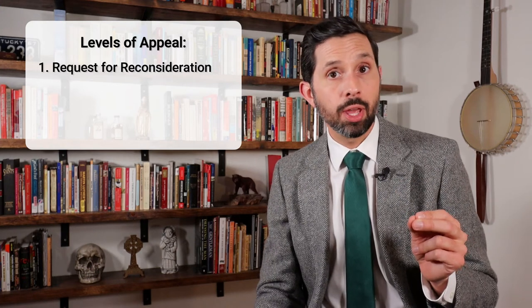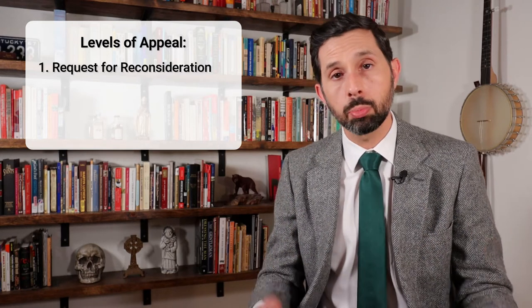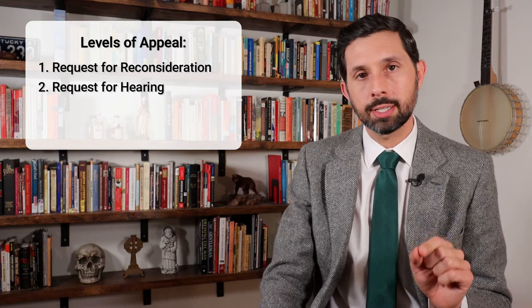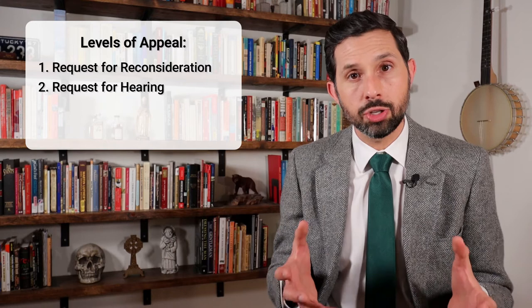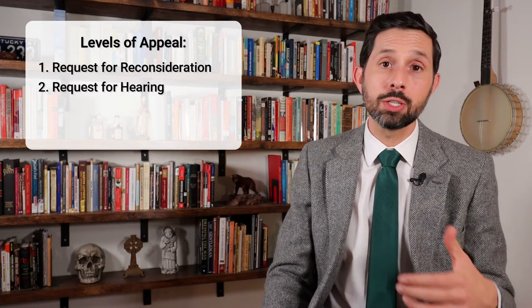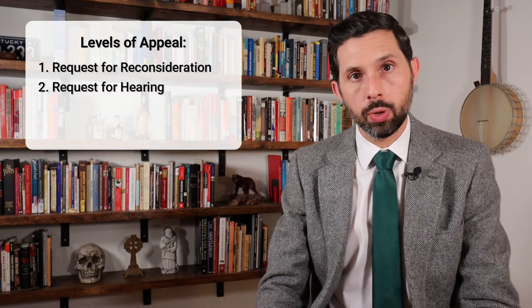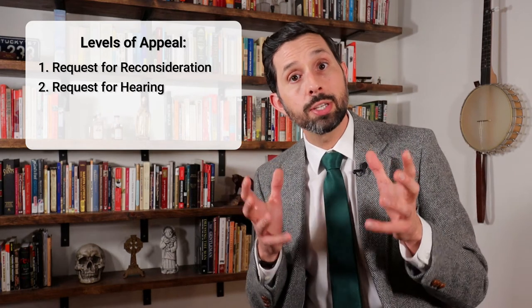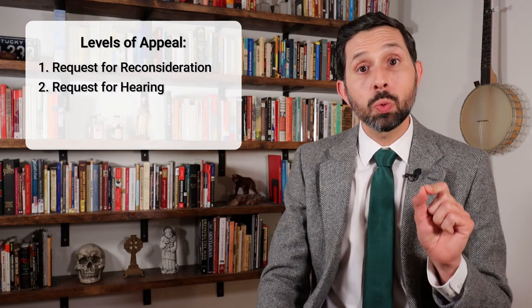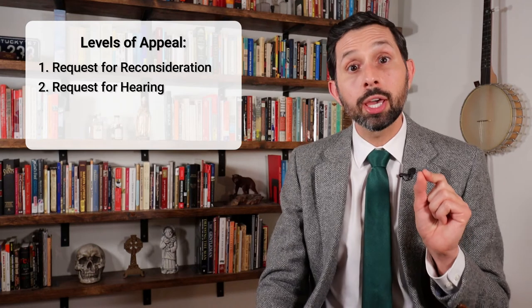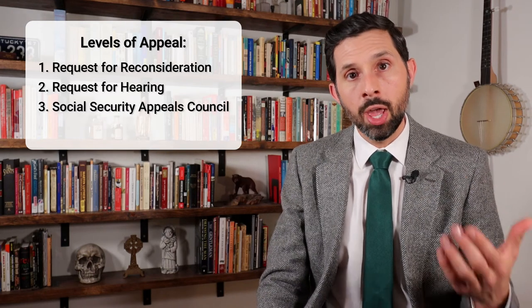If the SSA denies your claim, they'll send you a letter that explains why and tells you how to appeal. There are four different levels of appeal. First, you can appeal by filing a request for reconsideration within 60 days. The SSA will then take a fresh look at your case and any additional documents you provide. If your claim is still denied after the request for reconsideration, you can file a request for hearing within 60 days. The SSA will then schedule a hearing with an administrative law judge. If you get to this point, you should really consider hiring an attorney to represent you. At the hearing, the judge will question you and any witnesses you bring, and you or your attorney can also question the witnesses. The judge may want you to have more medical exams or tests, which the SSA will pay for. The judge will then make a decision and mail it to you. If you lose at the hearing, you can appeal within 60 days to the Social Security Appeals Council and then again to federal court.